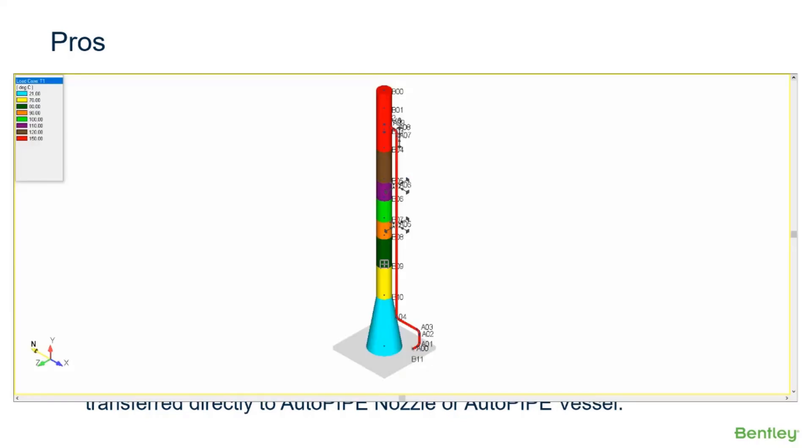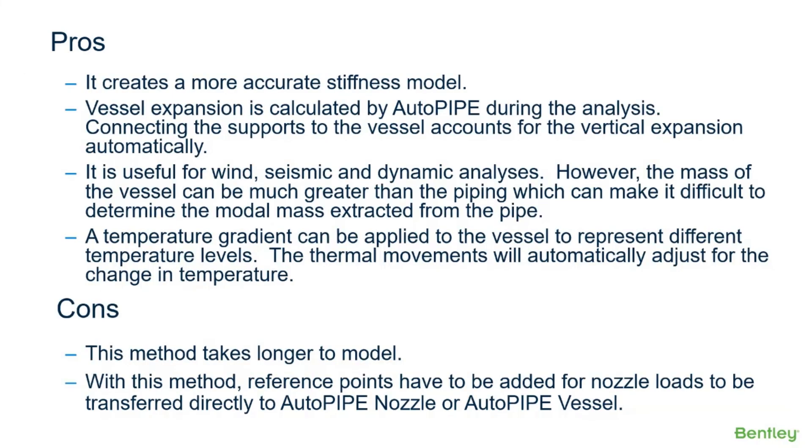This shows the example of applying a temperature gradient to the vessel to represent different temperature levels. So let's jump back to the workbook to go through an example of using method two.